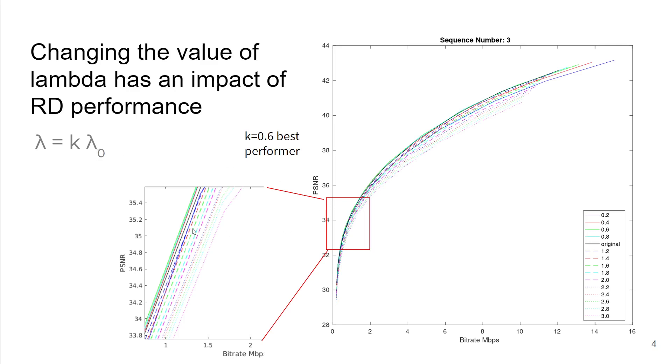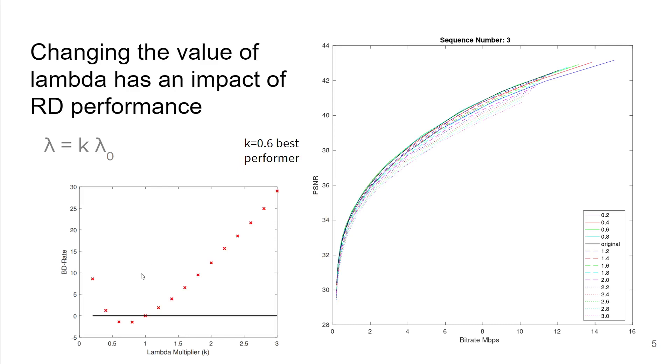We have a single sequence which was encoded using the same encoding parameters on the same codec. Just the only difference was we applied a multiplier k to adjust lambda from its original value, lambda naught, and had that work in the codec. We see that a few of the curves which are not the original one are having better performance.